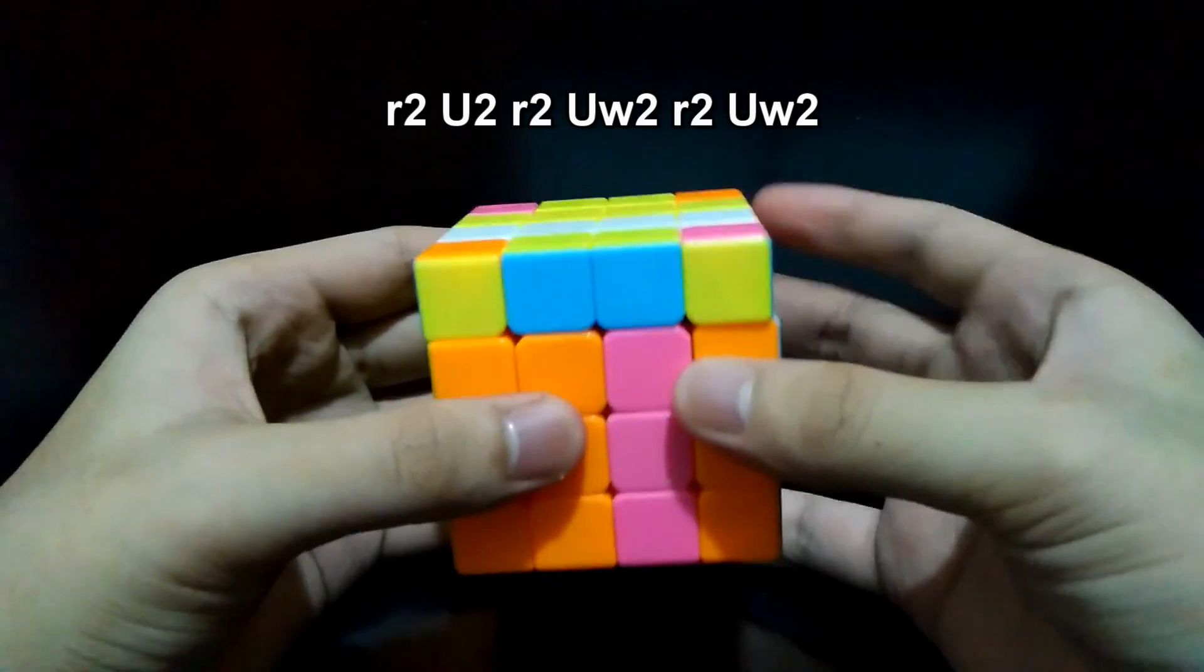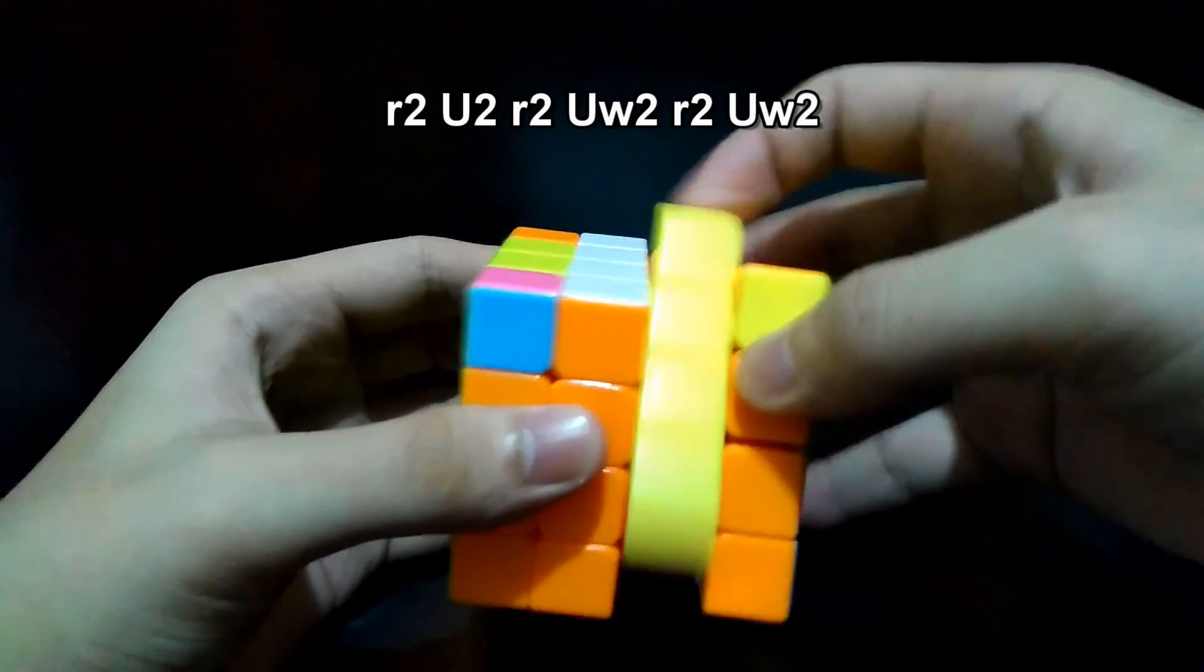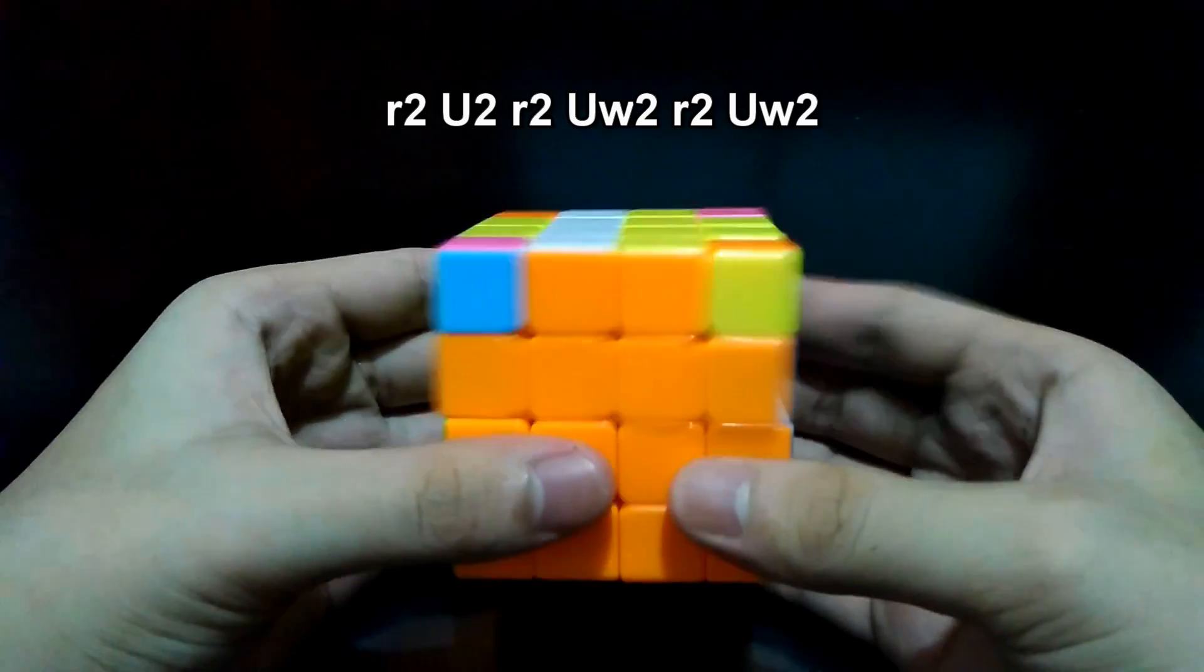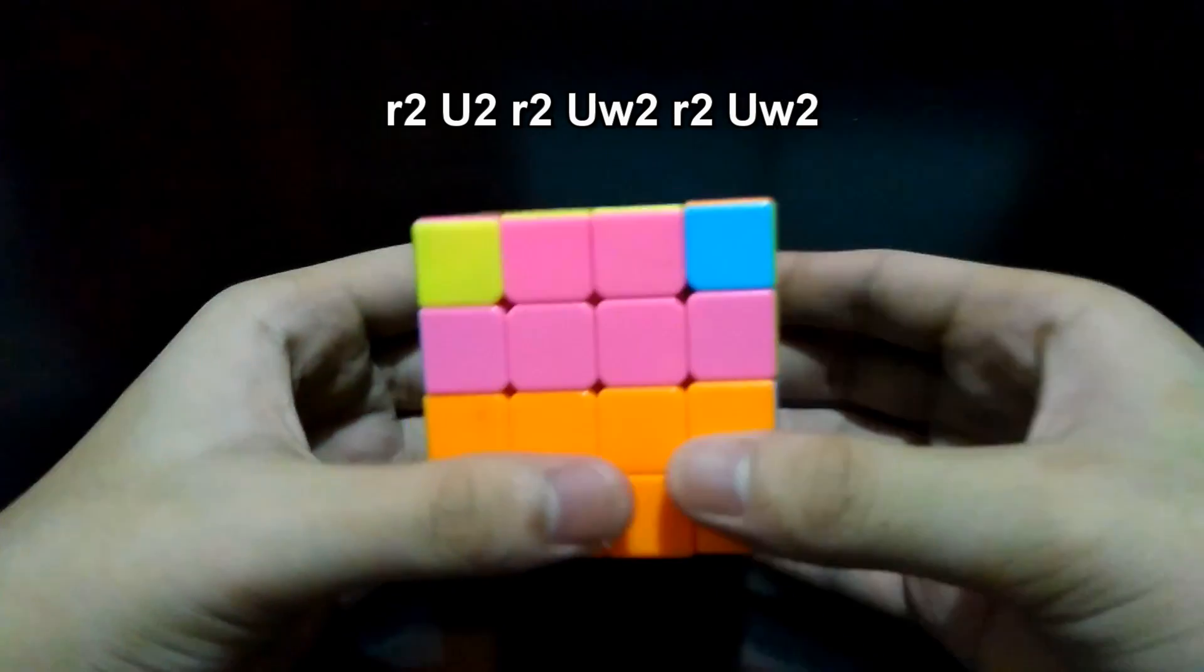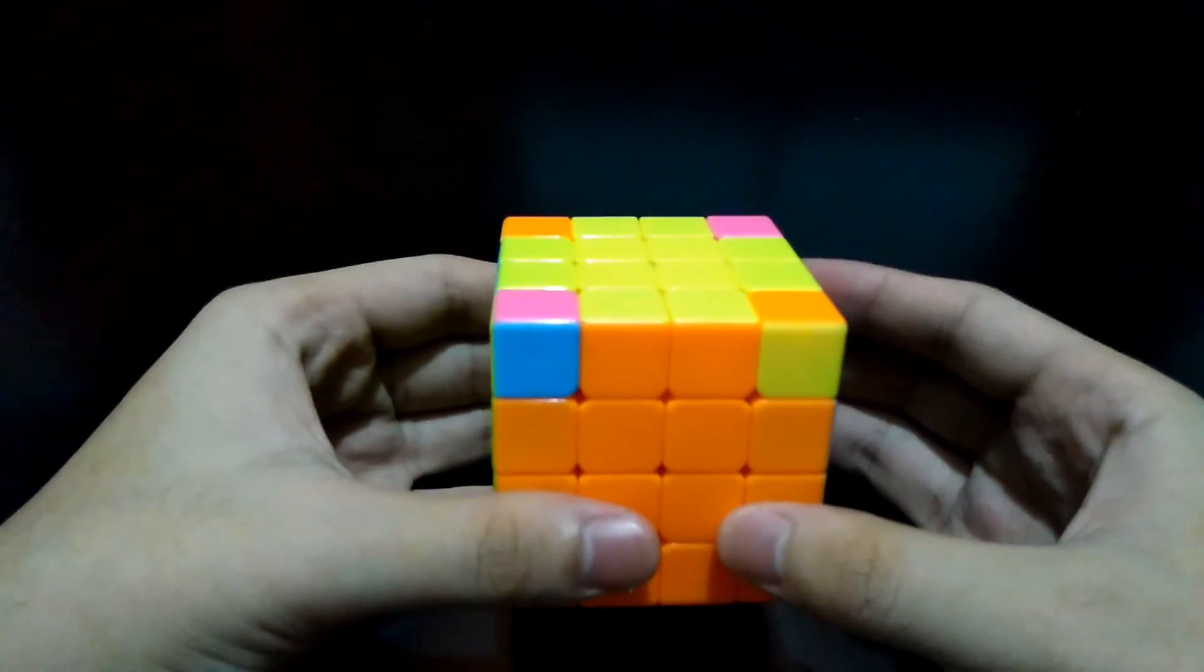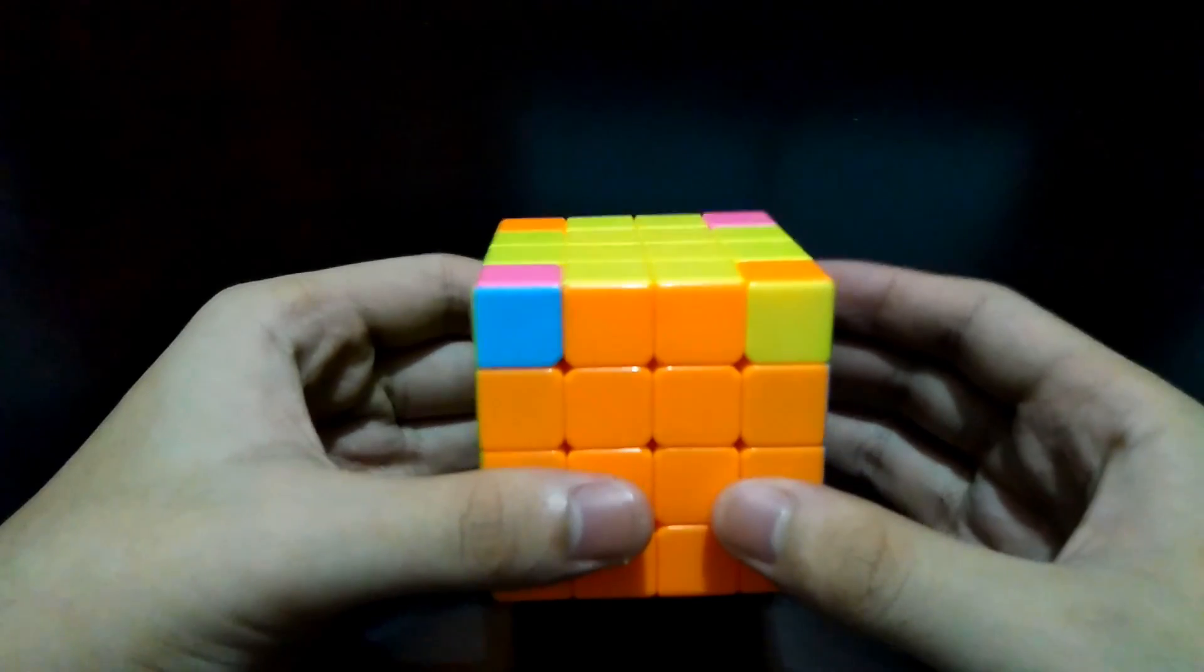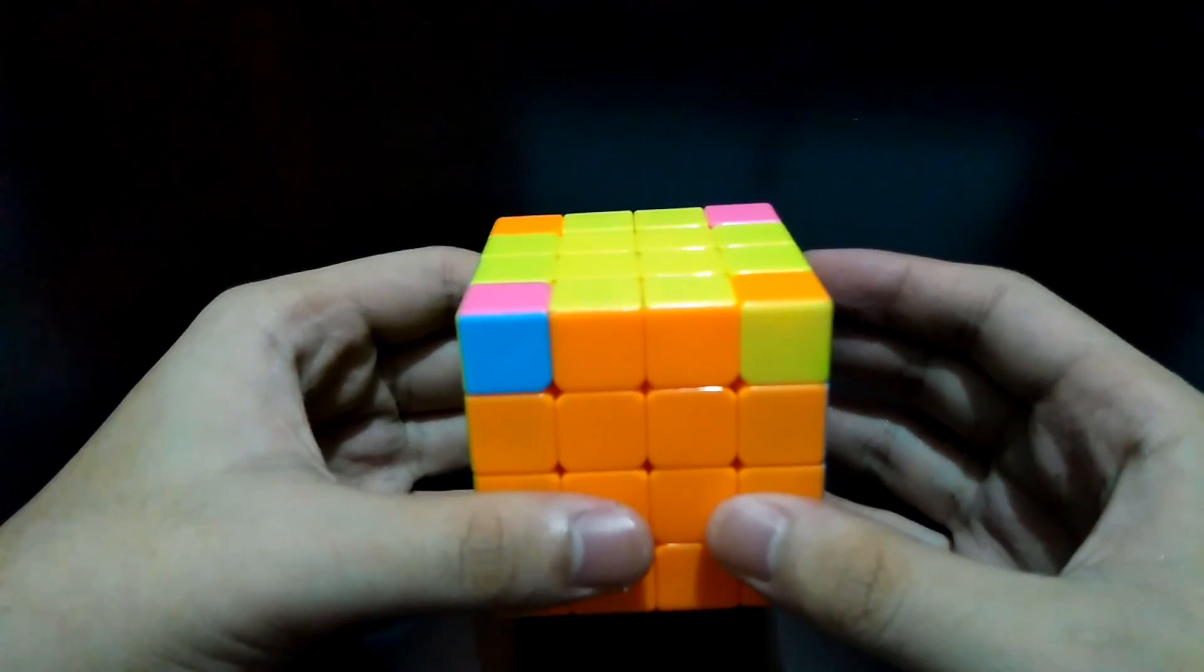R2 U2 R2 UW2 R2 and UW2. That's it, but unfortunately you'll go back facing the edges parity, but at least you don't have corner parity anymore.